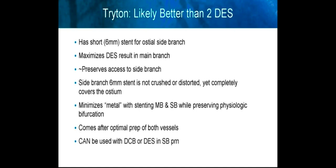We think the Triton should be better than a two-DES strategy. It has a short 6-millimeter stent designed for the ostial side branch. It maximizes drug-eluting stent coverage in the main branch while still preserving access to the side branch. That 6-millimeter side branch stent is not crushed or distorted and yet completely covers the ostium of the side branch. The configuration minimizes metal-on-metal interactions and preserves a physiologic bifurcation. Importantly, the Triton device is implanted only after optimal and documented preparation of both vessels, and can be used in combination with drug-coated balloons or additional drug-eluting stents if there is long disease in the side branch.